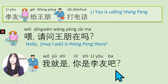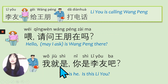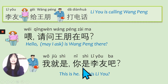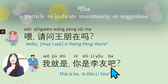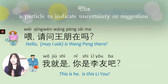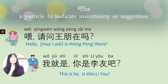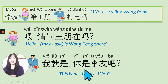我就是, 你是李友吧? 我就是 means 'this is he' — 'me speaking' — it's emphasized that it's me. 吧 is a particle always used at the end of a sentence to indicate a suggestion or uncertainty. So 你是李友吧 means 'I think that you are Li You, right?' 我就是, 你是李友吧.